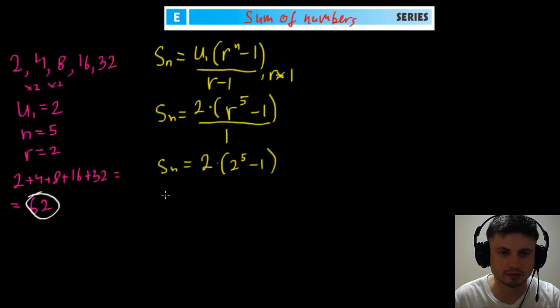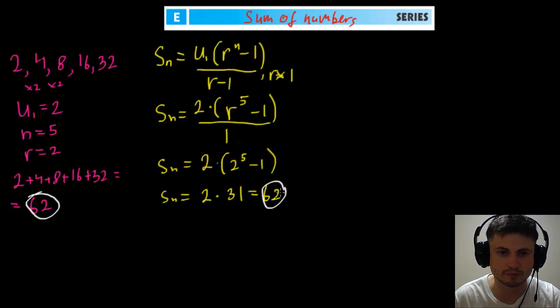And minus one, divide by one, you can cancel that out, and sum of this geometric sequence, or basically the geometric series equals two multiplied by 32 minus one, which is 31. And this gives us 62. So the answer is 62.